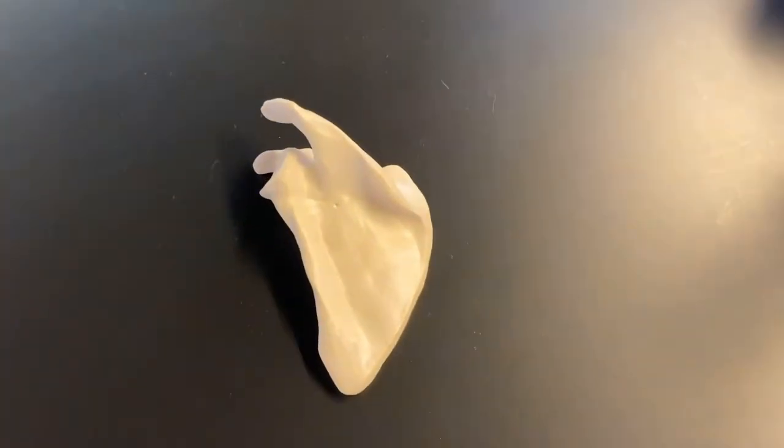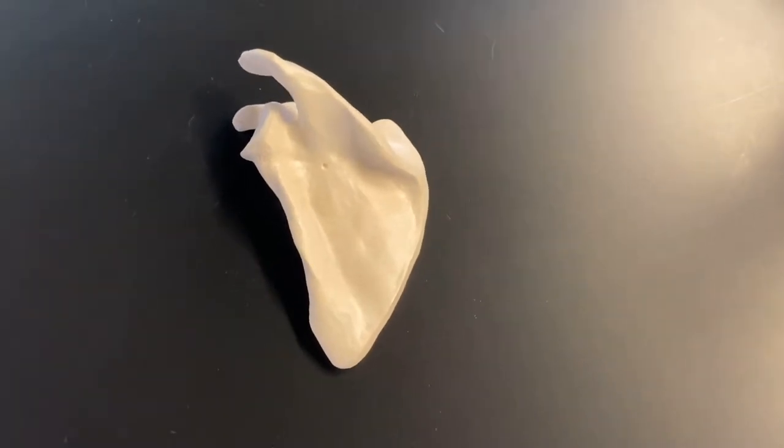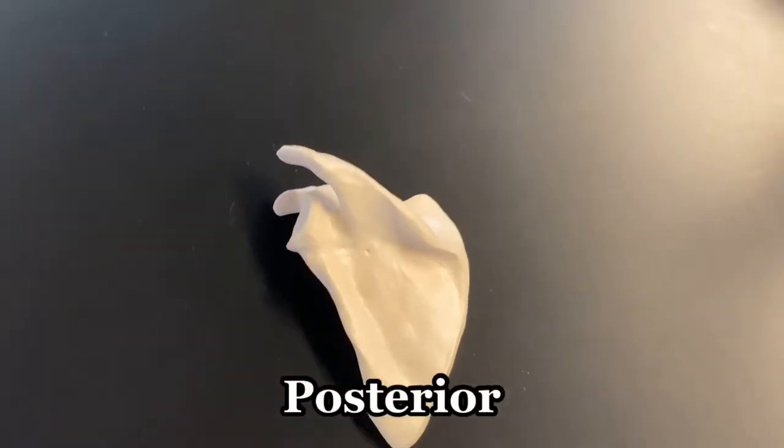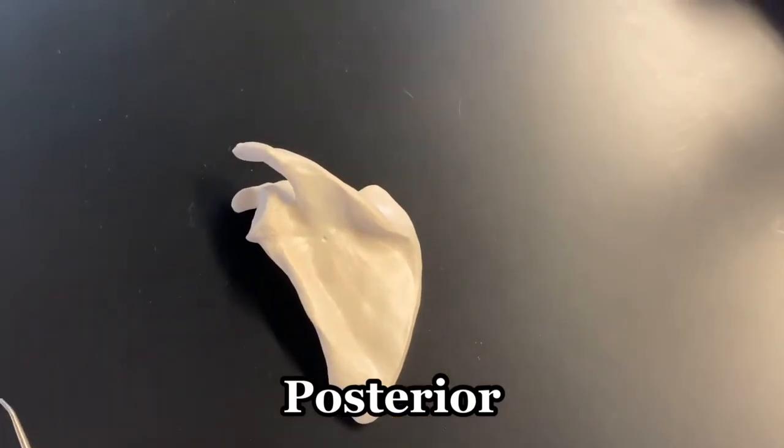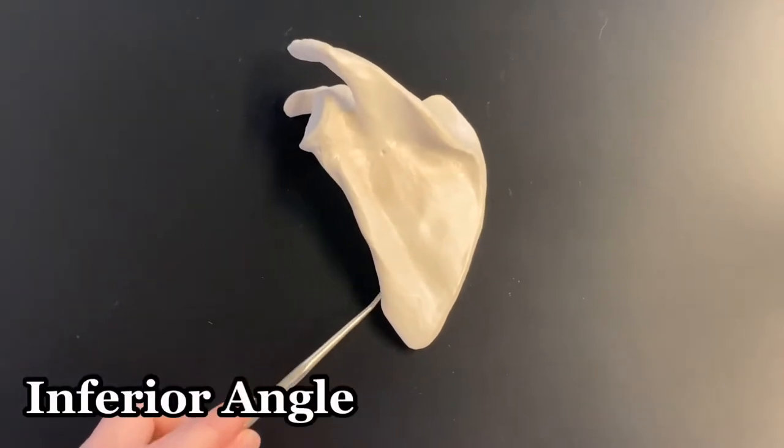All right, here is the scapula laid out on the table. And this would be a posterior view here, posterior view. And some of the quick things we want to go through are things like the inferior angle.